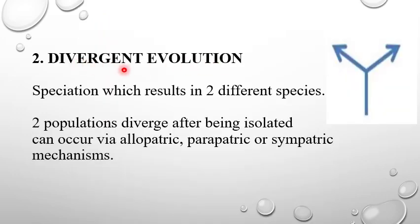Now, the second one is divergent evolution. It is the process of speciation which results in two different species. Two populations diverge after being isolated. It occurs via allopatric, parapatric or sympatric mechanisms. Now, first of all, I will discuss about the allopatric speciation mechanism.